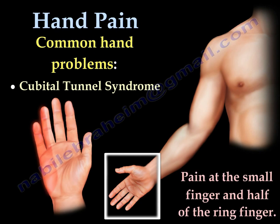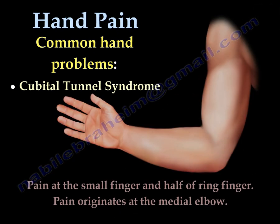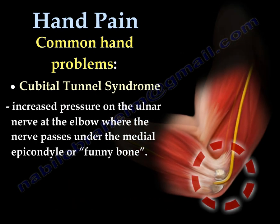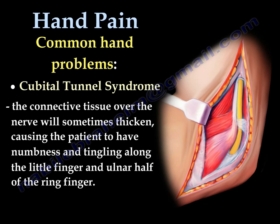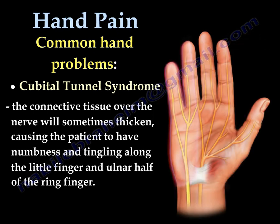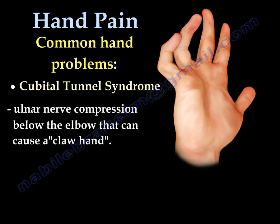Cubital Tunnel Syndrome causes pain at the small finger and half of the ring finger. The pain originates at the medial elbow where the ulnar nerve is compressed near the funny bone. When the nerve is compressed, it causes numbness and tingling of the little finger and the ulnar half of the ring finger. If the nerve is compressed below the elbow, the profundus muscle for fingers four and five will be affected, causing a claw hand.